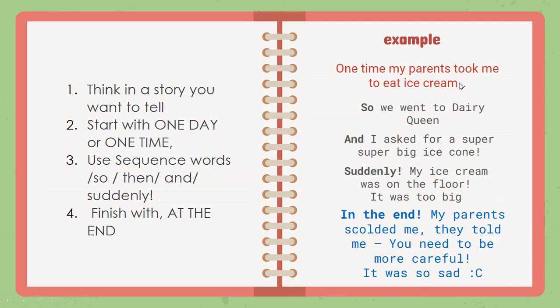So if you see, this anecdote is short — como puedes ver, esta anecdote is short, it's small. That's an example of what you can do, como tú puedes hacer. Remember, it doesn't need to be long — no tiene que ser muy larga. Algo con lo que tú puedas trabajar.